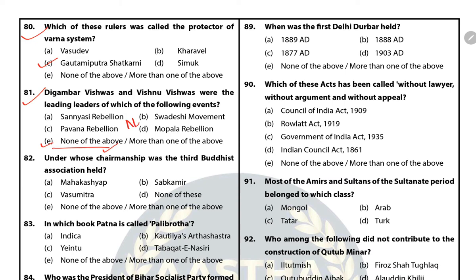Question 82: Under whose chairmanship was the Third Buddhist Council held? The answer is B — Sabkameet (Moggaliputta Tissa). The Third Buddhist Council was held in Pataliputra in 255 BC during the reign of Ashoka. It was presided over by Moggaliputta Tissa.